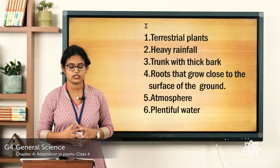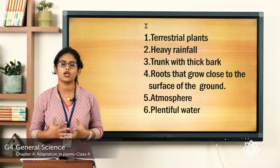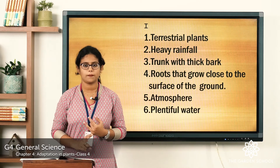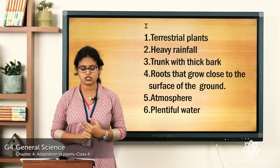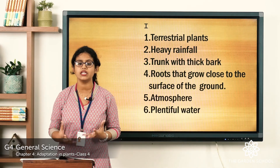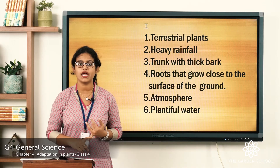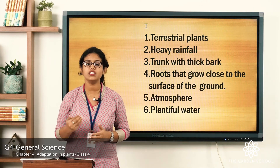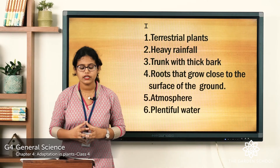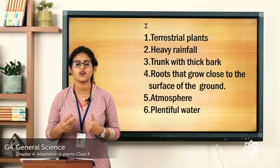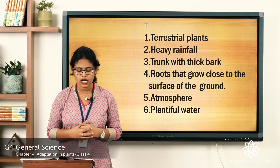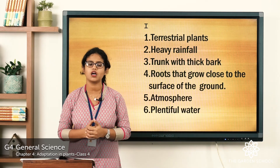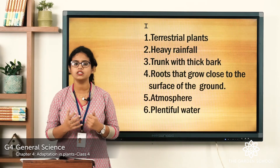Now let's see the answers. First: plants that grow on land — we call them terrestrial plants. Second: plants in rainforest are adapted to heavy rainfall, because in a rainforest it rains throughout the year and plants have special features to adapt to wet conditions. Third: deciduous trees are found in regions with cold winters, and these trees have a trunk with thick bark to withstand cold weather conditions.